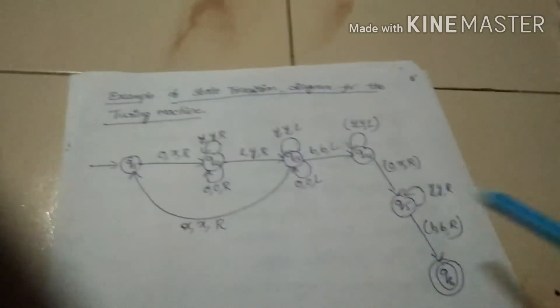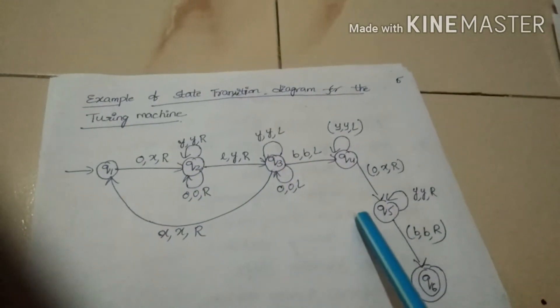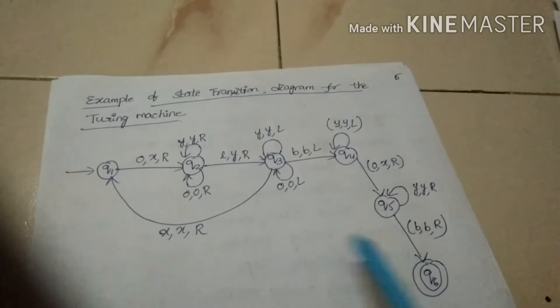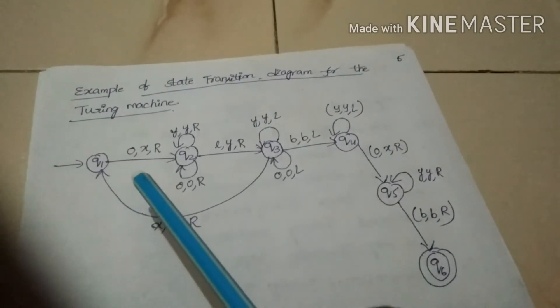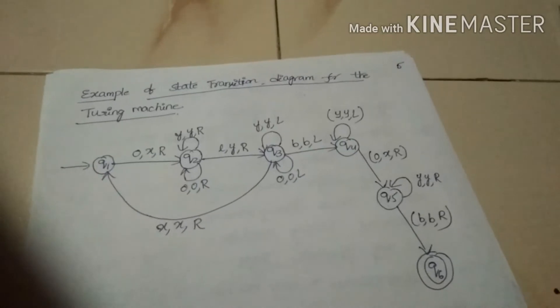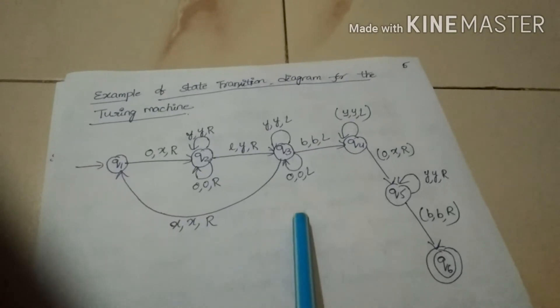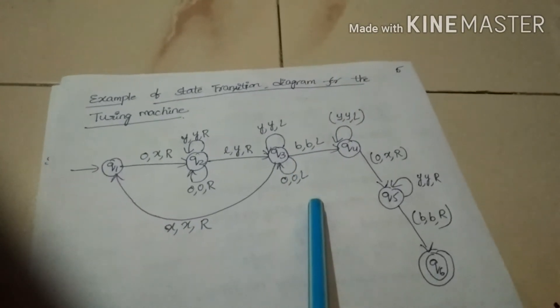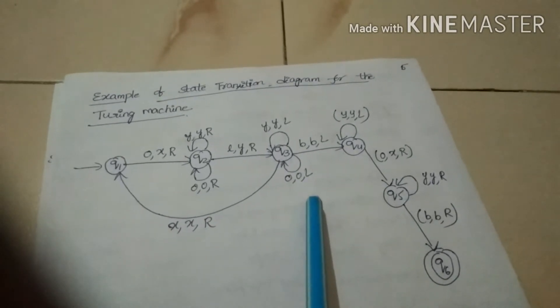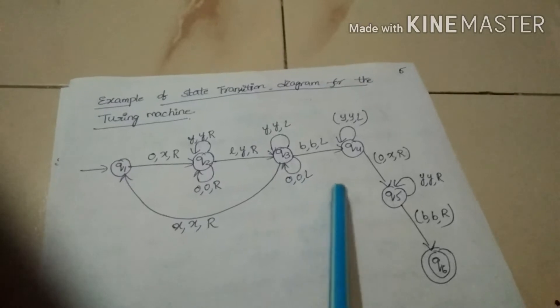Here is the example of the transition diagram for the Turing machine. There are six states: Q1, Q2, Q3, Q4, Q5, Q6. Suppose the input string to be processed by the Turing machine is 00101. This is the initial snapshot of the Turing machine, with the tape containing symbols X, Y, X, Y, B, X, Y, B.